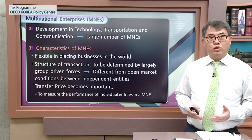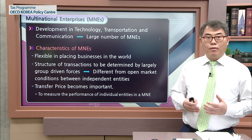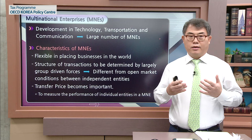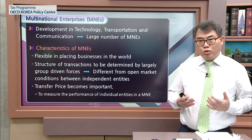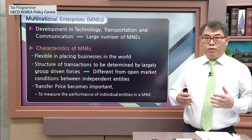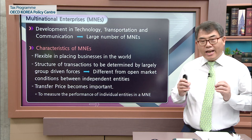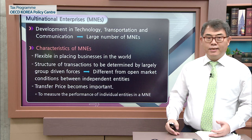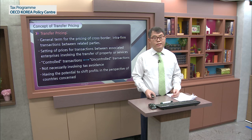In such a situation, it becomes important to establish the appropriate price called a transfer price, especially because multinational enterprises need tools for measuring the right performance of each individual entity in their group. So in order to properly measure the performance of the entity in their group, they need some mechanism which is often called a transfer price. That is the original reason why the concept of transfer pricing came about.